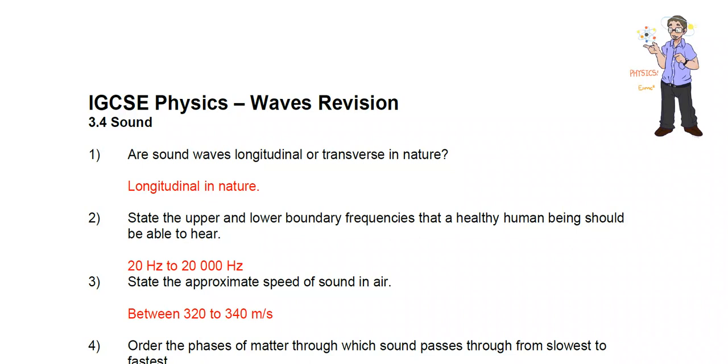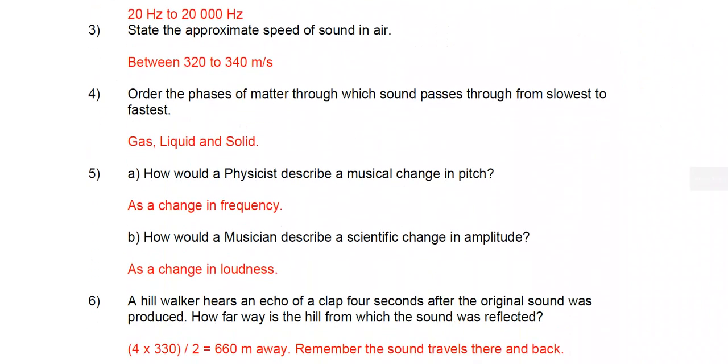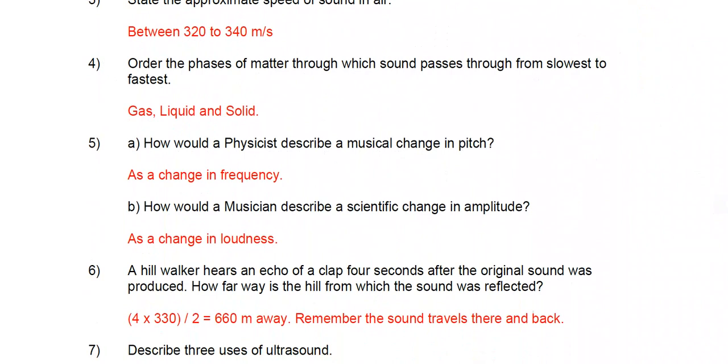But roughly on planet Earth in air, the speed of sound is between 320 to 340 meters per second. Order the phases of matter through which sound passes through from the slowest to the fastest.